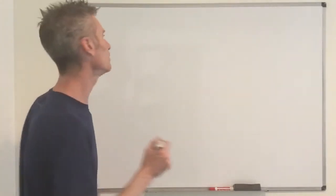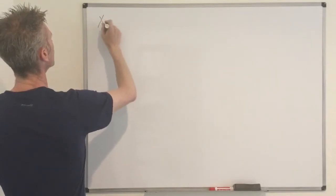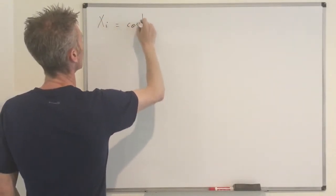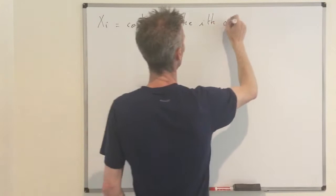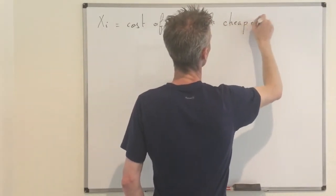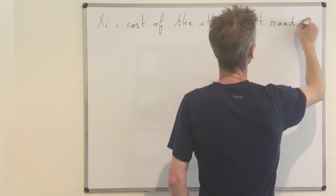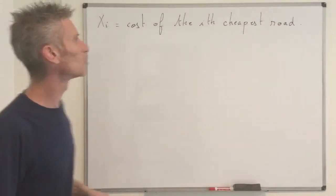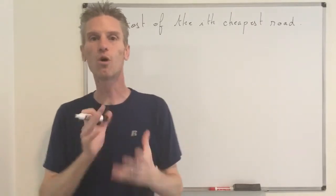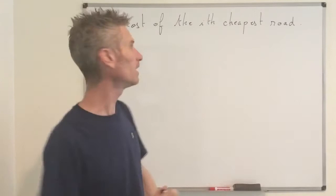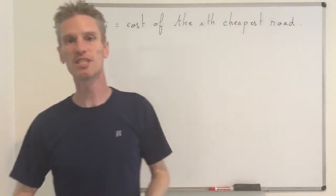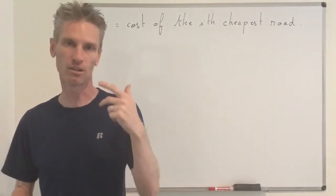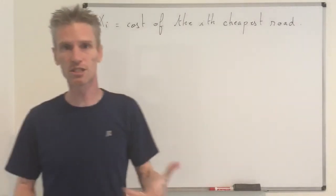Now let's look at the case N equals 3. To solve the problem it helps to call Xi the cost of the i-th cheapest road. These random variables Xi are well defined for all i from 1 to N choose 2. In the case N equals 3, you have exactly 3 of those random variables.